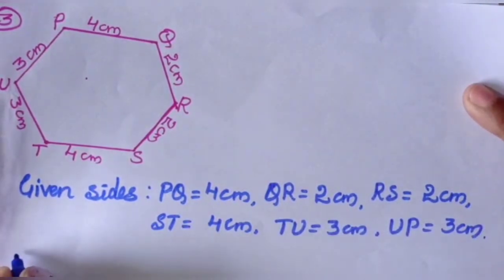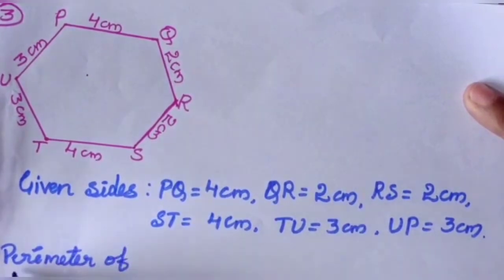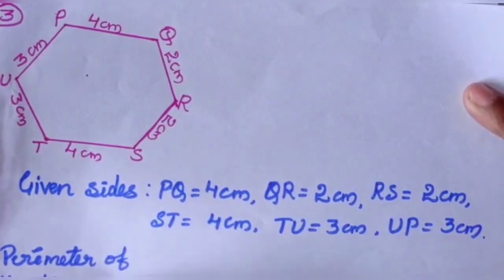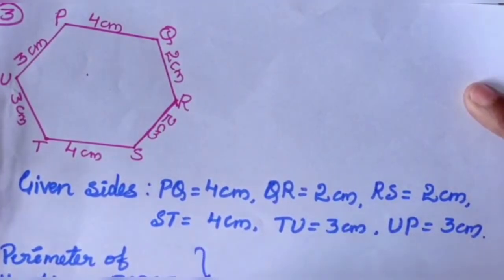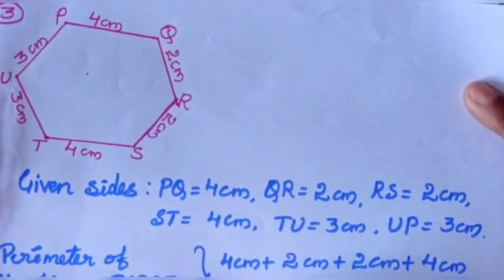So we write down perimeter of the figure. Perimeter of the figure PQRSTU. So add it all sides of figure. PQ equal to 4 cm plus QR equals 2 cm plus RS equals 2 cm plus ST equal to 4 cm plus TU equal to 3 cm plus UP equals 3 cm. So total add the cm.